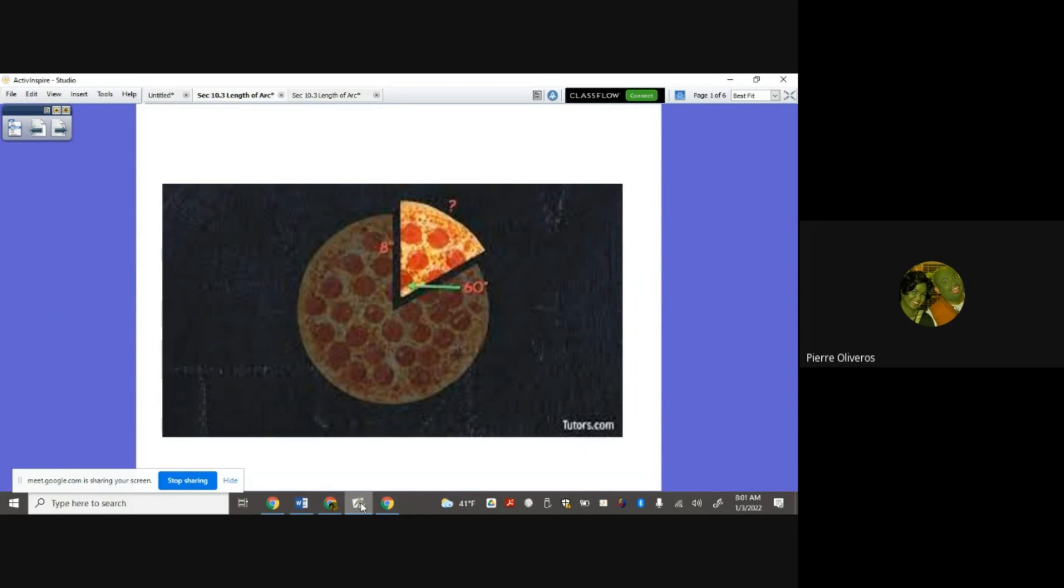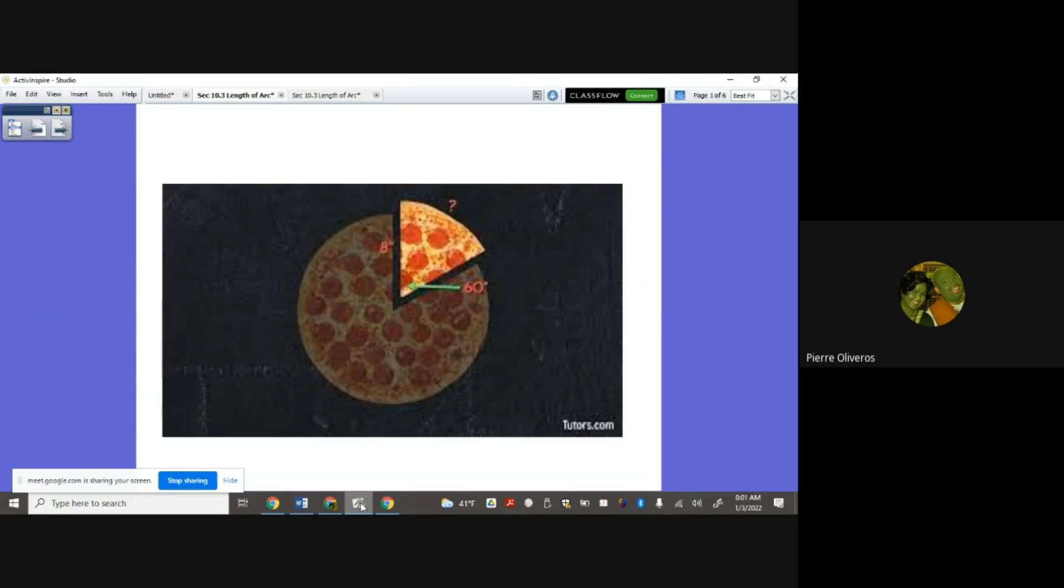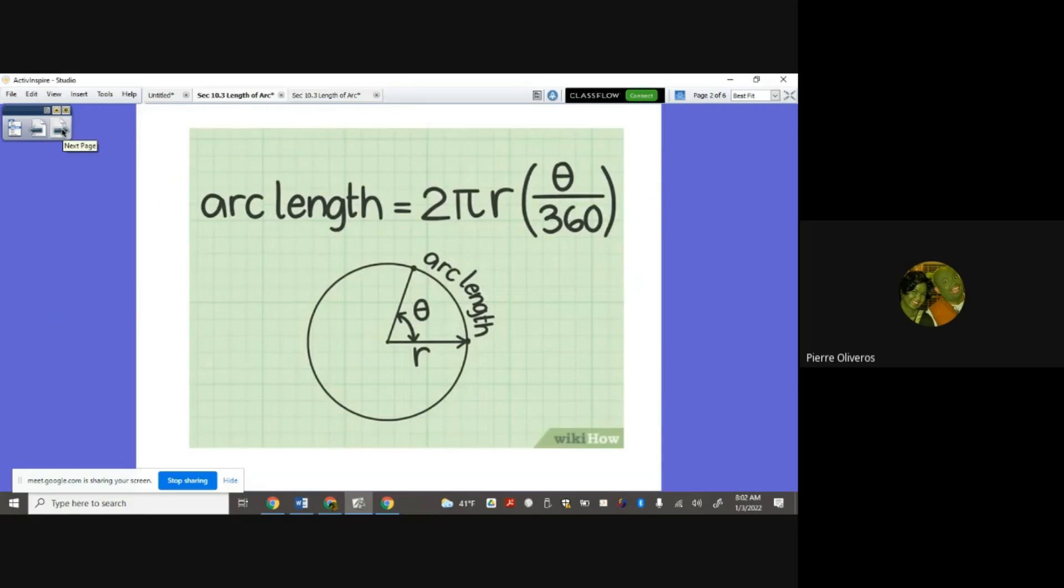What is the length of arc? The length of arc is just a portion of the circumference of a circle. Like for example, with pizza, when my family eats pizza, my children don't like the crust. I like the crust of pizza, and that's what I always get. Basically, we're going to try to measure how long is the crust of a pizza. So what is the formula?